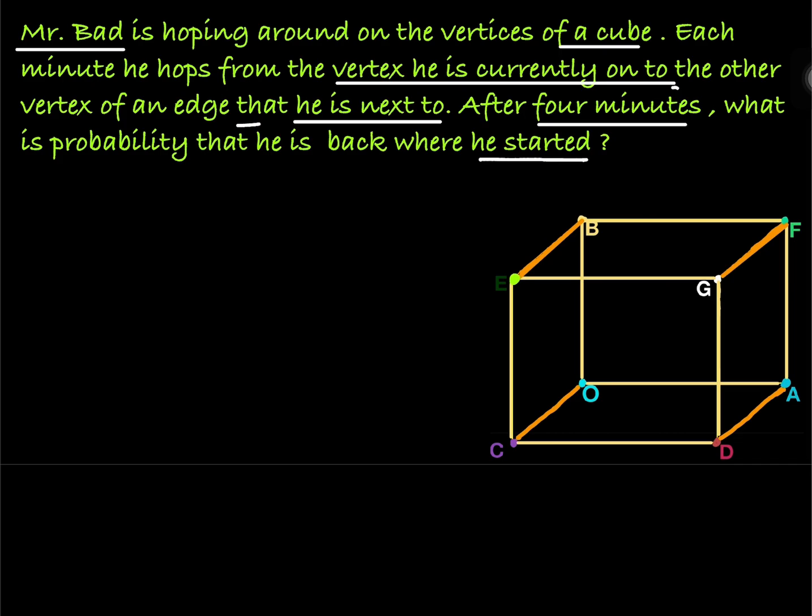This question we will do by two methods. Method 1, required probability. Now we can assume that Mr. Bad is at any position, let he is at O. What we want is after 4 steps, he should be back at O.